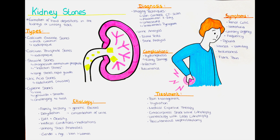A urine sample may be collected to analyze the presence of blood, crystals, infection or other substances that may indicate kidney stones or related complications. Blood tests may be performed to evaluate kidney function, electrolyte levels and other parameters that can provide information about the overall health of the kidneys. If a stone is passed or removed, it can be analyzed in a laboratory to determine its composition. Stone analysis helps to guide treatment and prevention strategies.